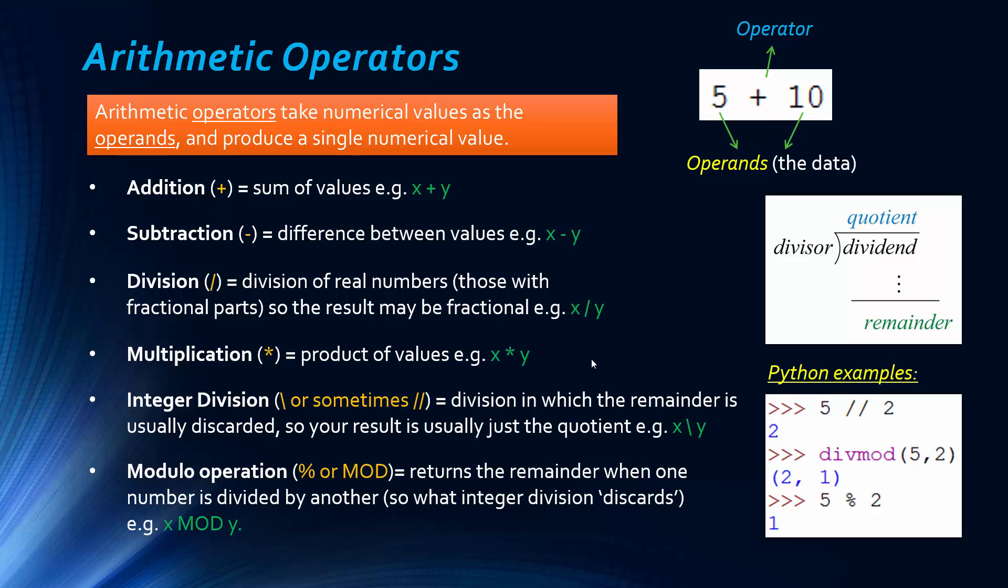So as an example, firstly, of integer division, 5 with 2 forward slashes 2, that's the operator for integer division in Python. We get 2 because 2 goes into 5 two whole times. If you want both your quotient and your remainder kind of separately but expressed together, you can use a built-in function.